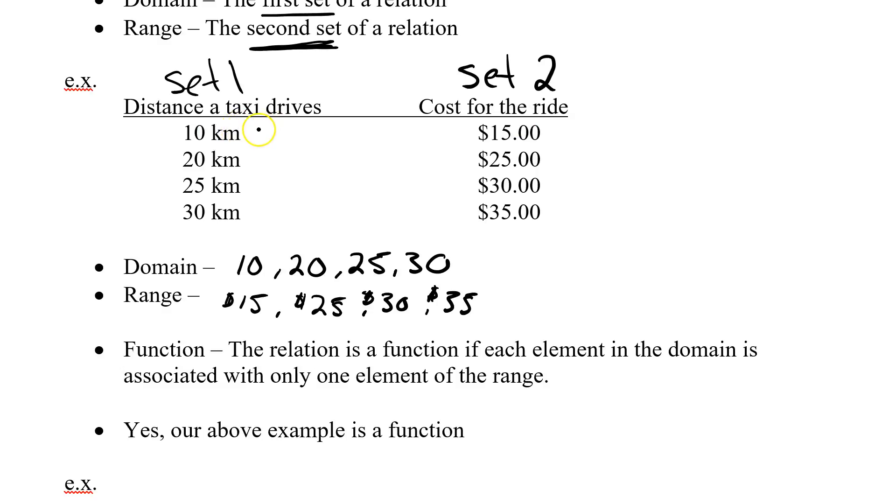Domain is my first set. Every element of set 1 applies to only one element of set 2. 10km goes to $15. Does a 10km ride cost anything else but $15? No, it doesn't cost $25, $30, or $35. In fact, every element of my domain goes to a single element in my range. So in this case, yes, I've got a function. One to one means a function.